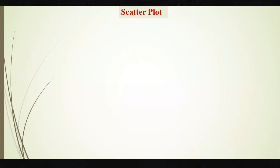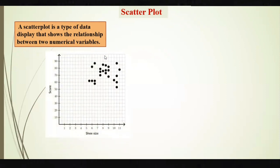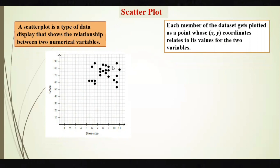So what is a scatter plot? It is also called a scatter diagram. A scatter plot is a type of display that shows the relationship between two numerical variables. Here we have shoe size and a score. Each member of the data set gets plotted as a point whose coordinates are x and y. For example, x might be around 10.5 for shoe size and y around 85 for score.